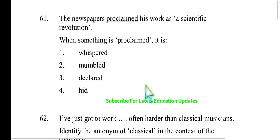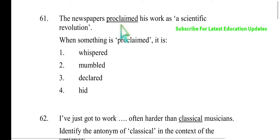The sentence is: 'The newspapers proclaimed his work as a scientific revolution.' The underlined word is 'proclaimed.' You can understand the word and find its nearest meaning. Those who are good at vocabulary can easily pick the answer. So, it is almost a declaration — newspaper means reporting and publishing.